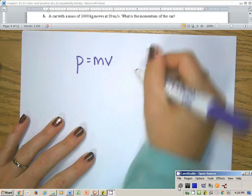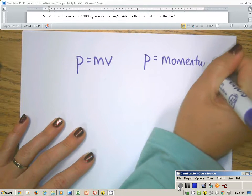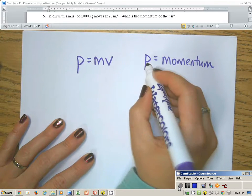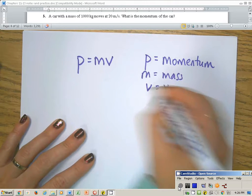I don't know why, but p is what stands for momentum. I guess all the m's were taken, so someone decided on p. It doesn't really matter, we're going to work with it. m is mass, and v is velocity.